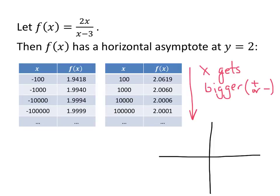If I draw this dotted line at y equals 2, I can see that as x approaches negative infinity, my y values are approaching 2 from below. On both sides, I have a horizontal asymptote at y equals 2.